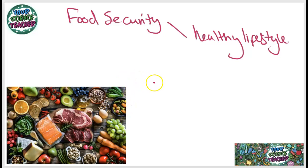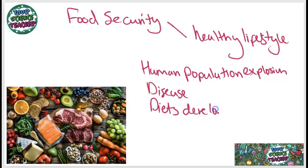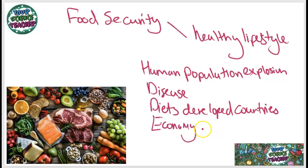Food security is also affected by the human population explosion, the amount of disease that can spread through different crops or livestock, and the changing diets in developed countries, which puts more pressure on less developed countries. Something else affecting food security is the economy in agriculture — if it's no longer economically viable for farmers to produce a certain food, they will stop making it, and the economy massively plays an effect on our food security.